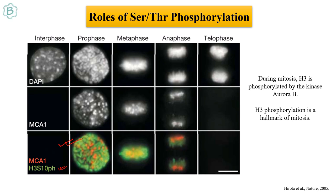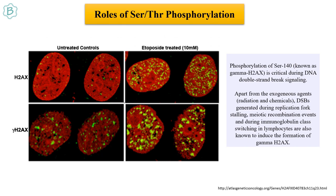H2AX is a variant of H2A histone; when its serine is phosphorylated, it is called gamma-H2AX. When cells are treated with a DNA-damaging drug, gamma-H2AX is generated — the serine gets phosphorylated. Treated cells show much more H2AX phosphorylation than untreated cells, though some baseline phosphorylation exists due to double-strand break generation during replication fork stalling or recombination events.